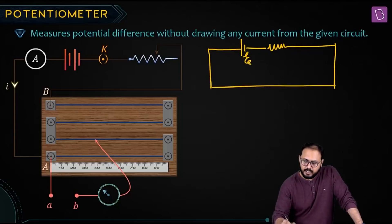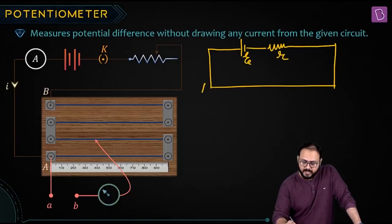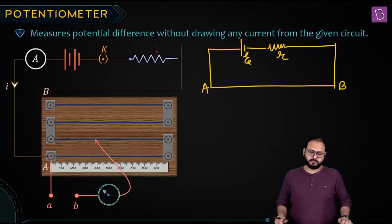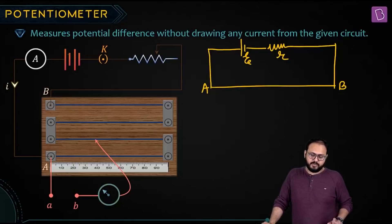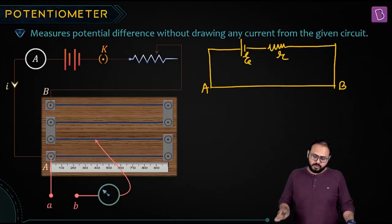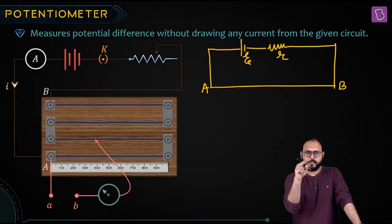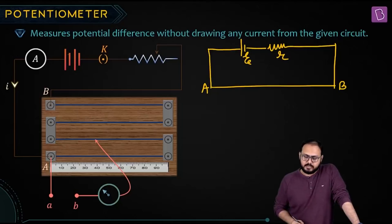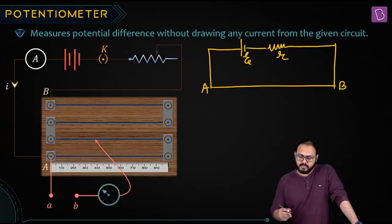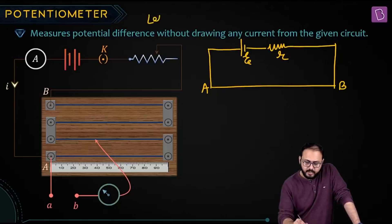This is called E (EMF). This is called small r (internal resistance). This is called wire A and wire B. Don't get confused — A and B is one wire; it can be made bigger. There is a resistance of AB — let the resistance of AB be capital R.